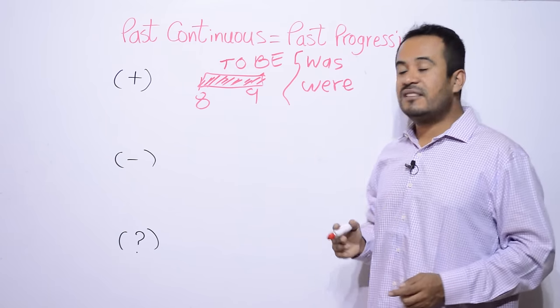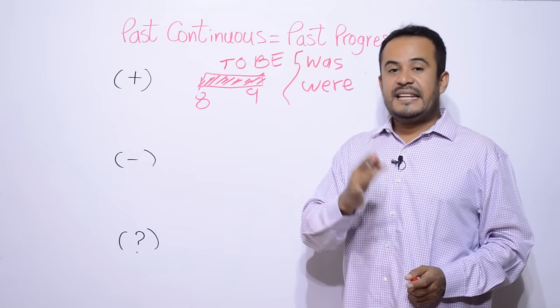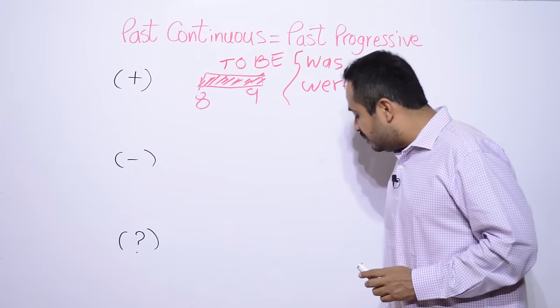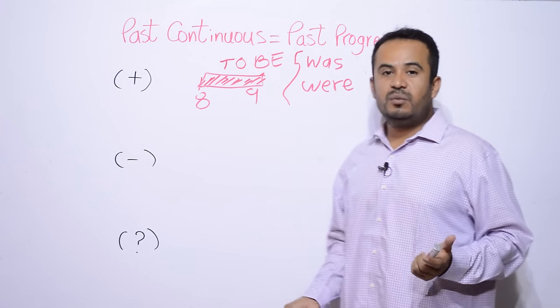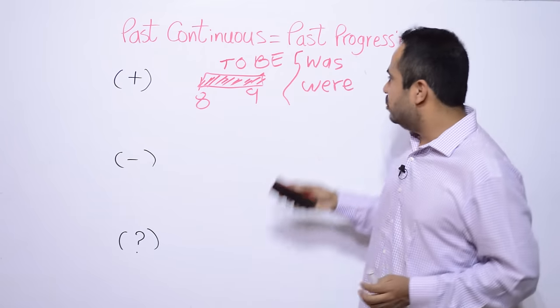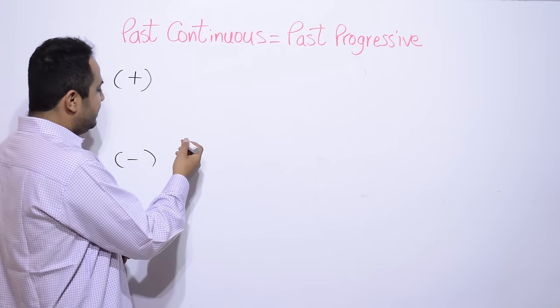Tú ya sabrás que para algunos sujetos como I, he, she, it es was, mientras que para otros como we, you, they es were. Vamos a usar verbo to be en pasado. Estas son las características del pasado continuo. Verbo to be y que el evento tenga cierta duración. Voy a escribir las fórmulas a continuación para guiarnos y que sea más fácil.